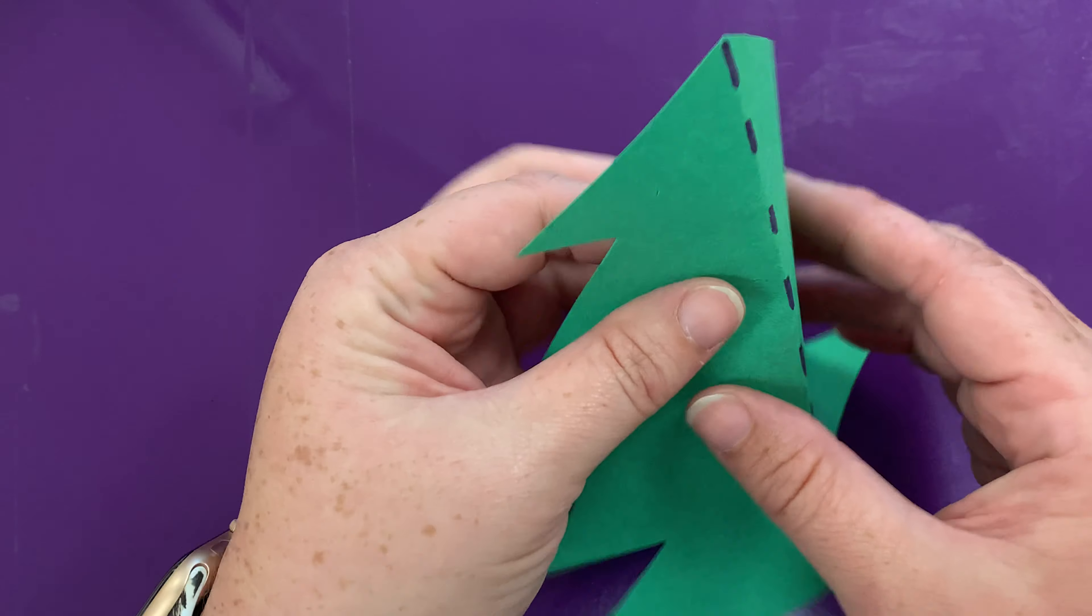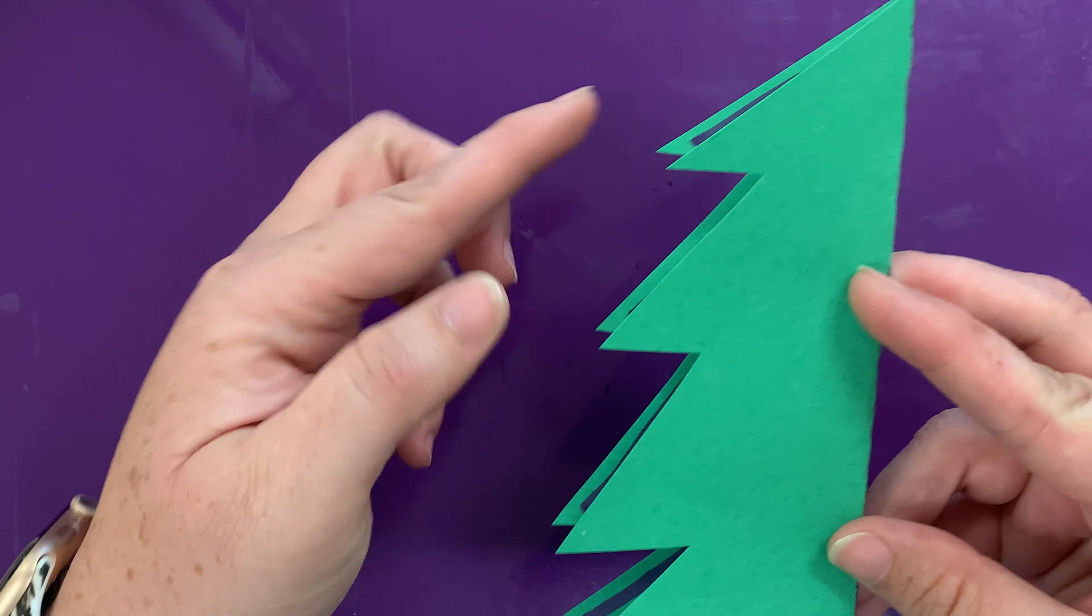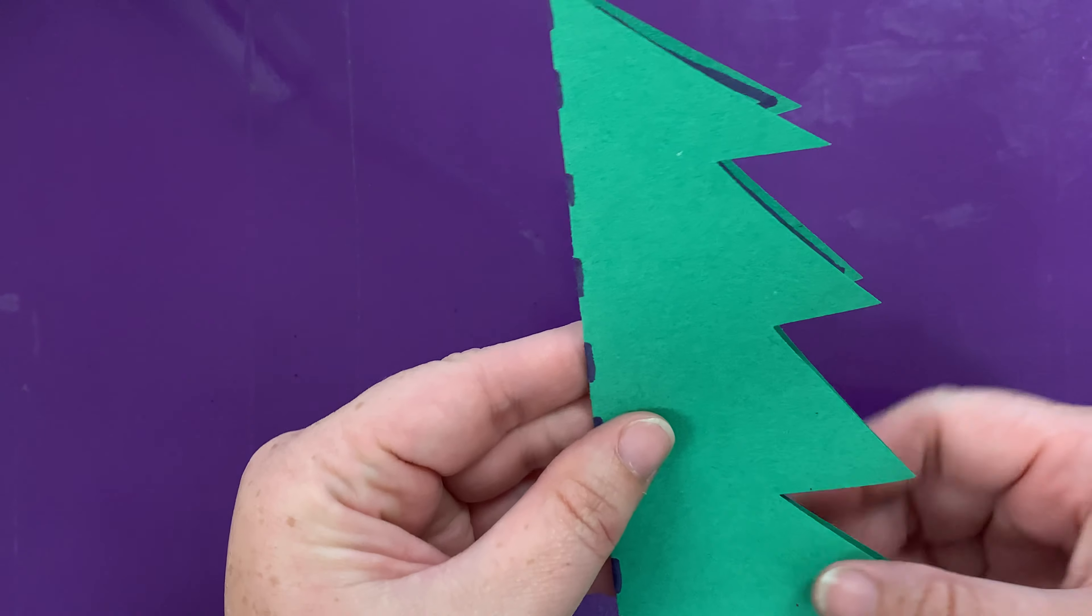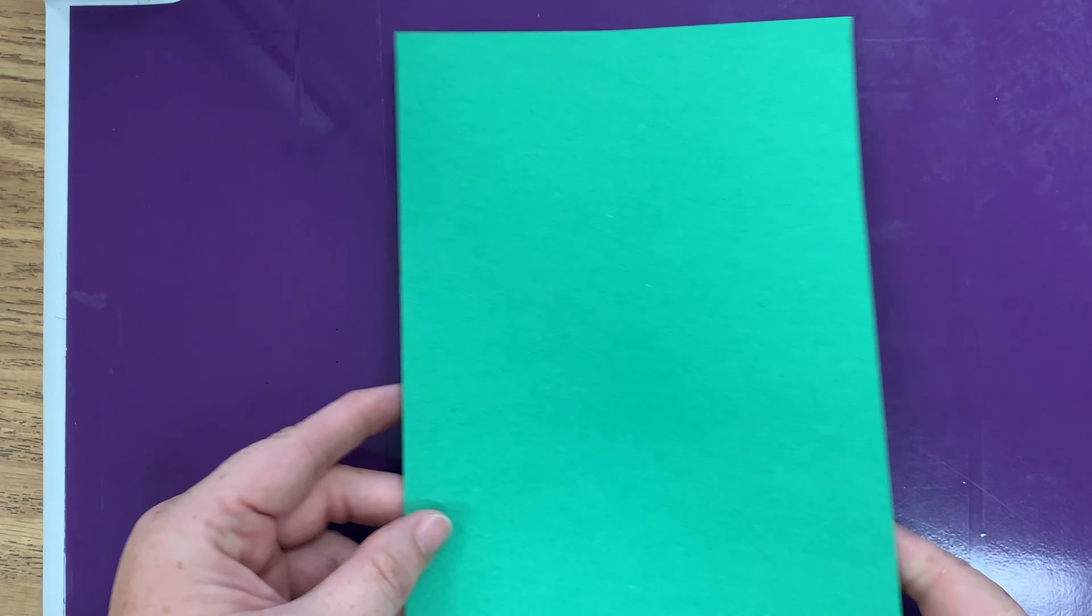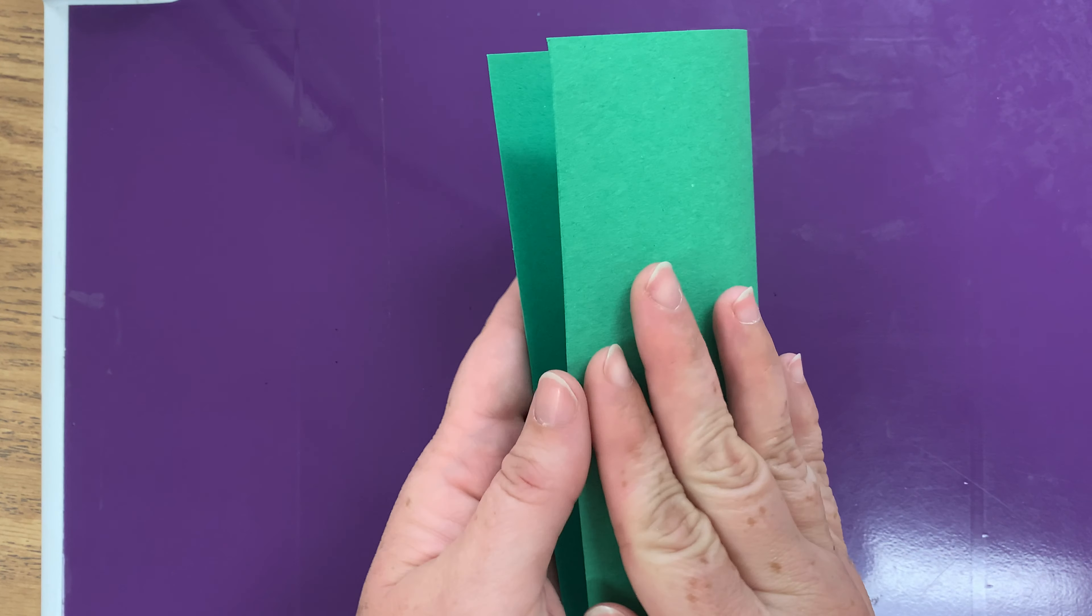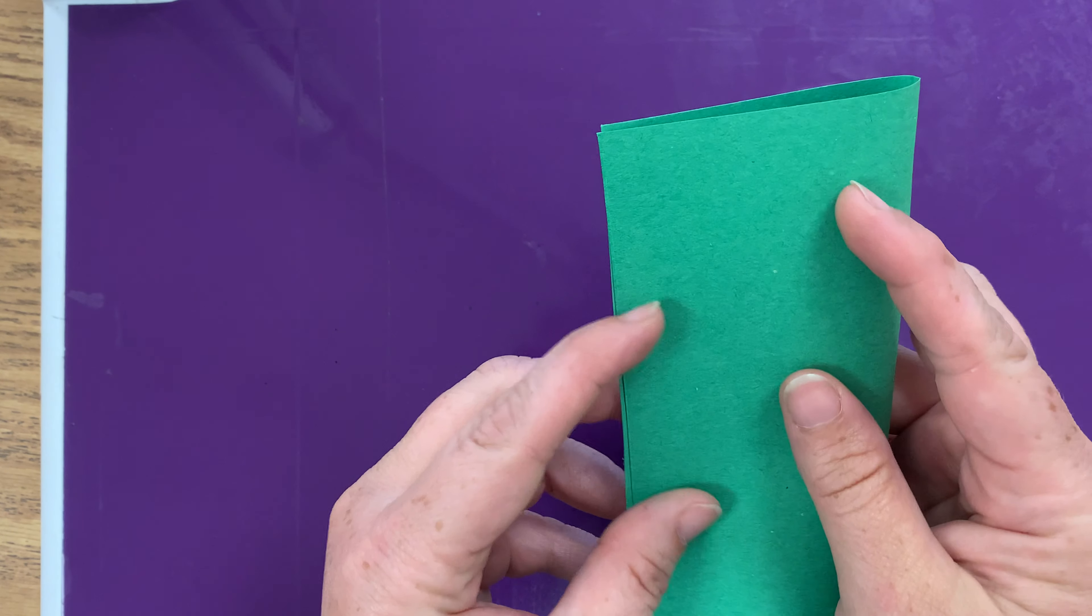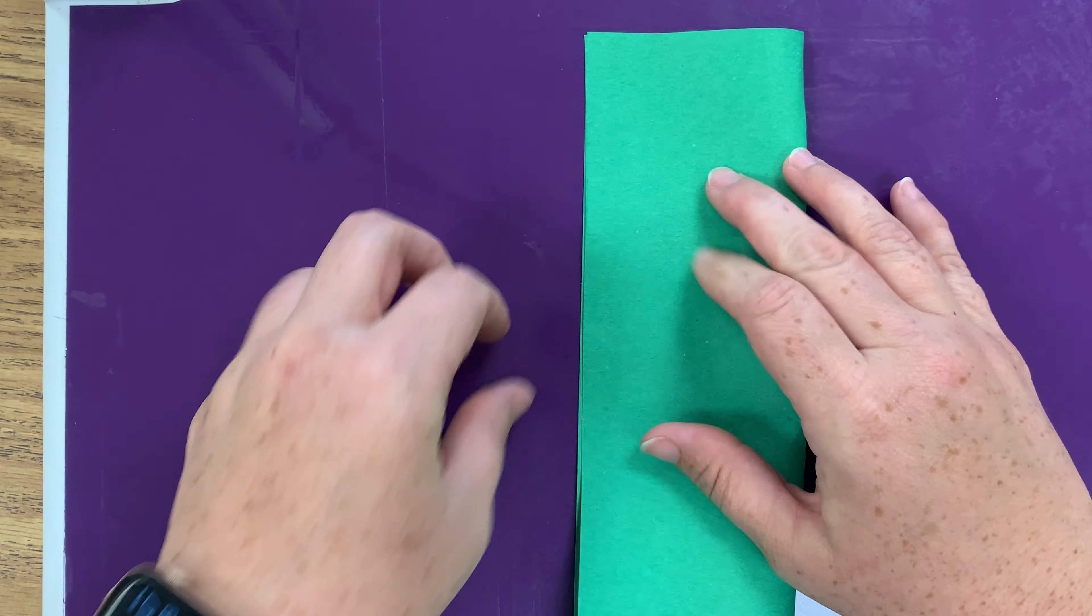So if I were to fold right here on this dotted line, the left side and the right side are gonna match up perfectly. So take your sheet of paper and you're gonna fold it in half in the middle. That is your line of symmetry.